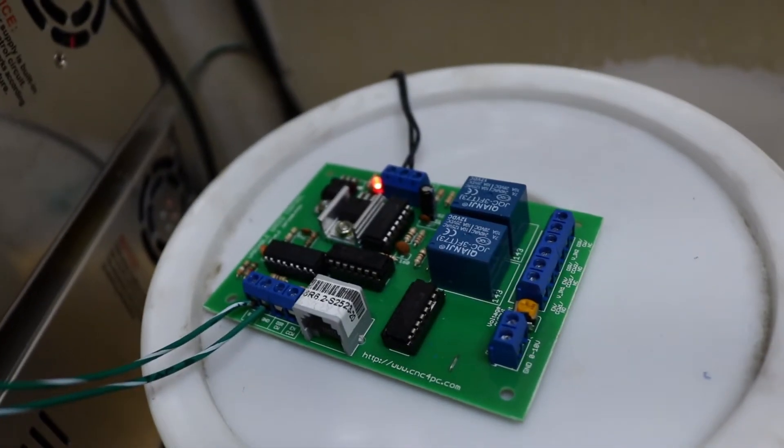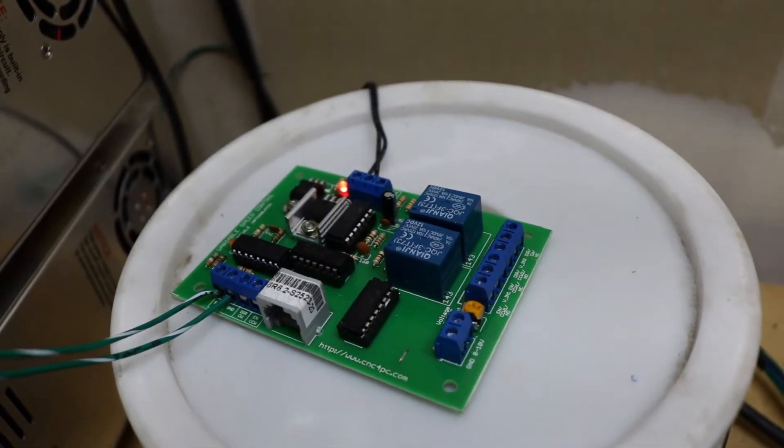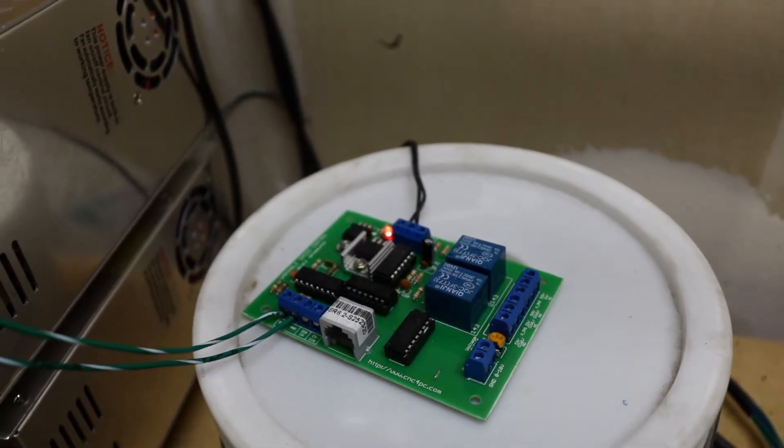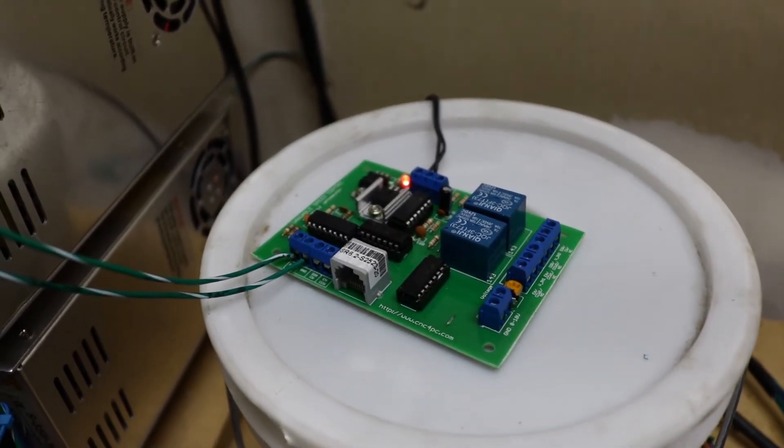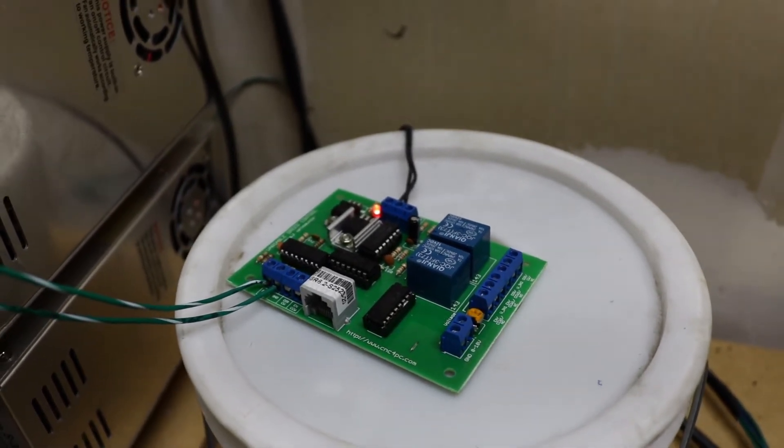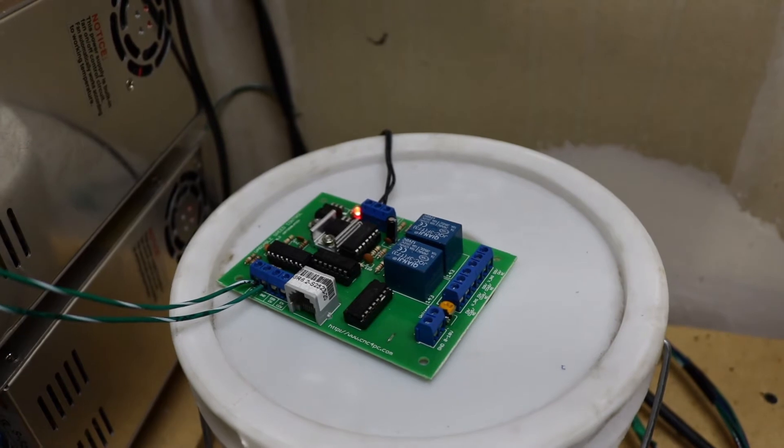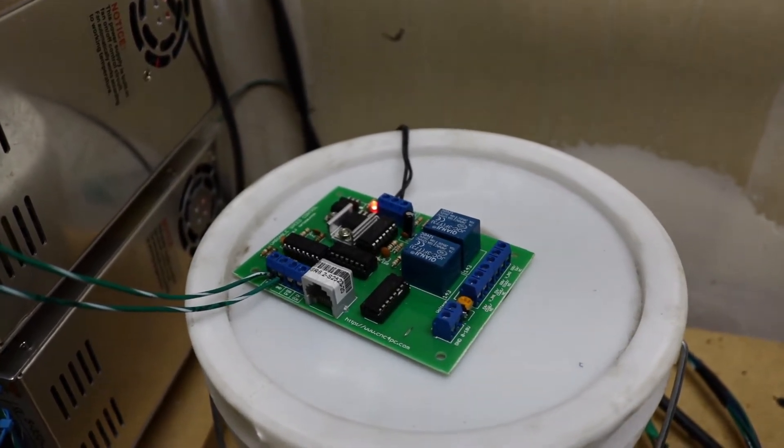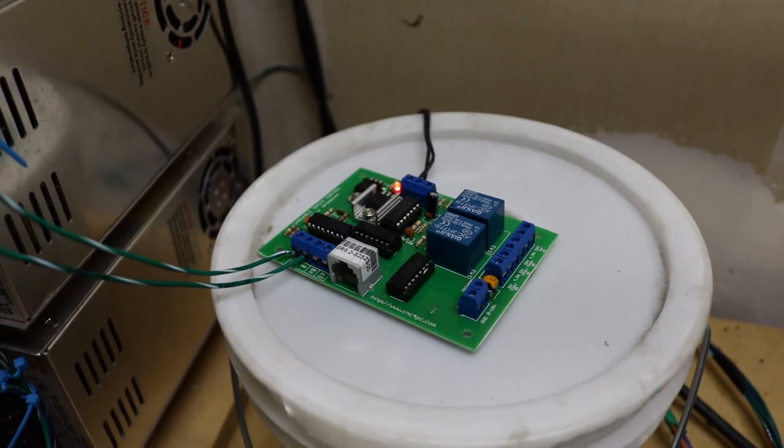That right there is the CNC4PC.com C6 variable spindle speed control board. The idea is that you can spit out stepper pulses that vary in frequency instead of pulse width. This board is going to interpret those pulse widths and scale a 0 to 10 volt signal. I didn't really research what my mill was needing. That's one drawback - my mill goes from 0 to 12 volts, this only goes 0 to 10. I know I'm going to need to amp it up to get the full power out of my mill.